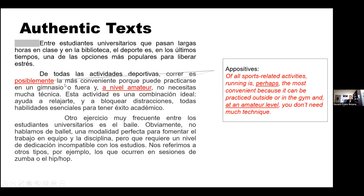Another thing we tend to find in authentic texts are appositives — things like 'of all sports-related activities, running is perhaps.' We find a lot of that in native discourse. We add information that the sentence would be completely grammatical without, but that we want to add for nuance. It happens again later: 'you can practice it at an amateur level.' That information is not needed for the sentence to be correct, but it happens a lot in native discourse.